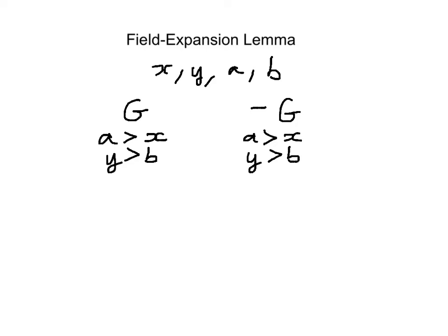However, the members of G are in agreement in terms of how to rank X and Y, and whatever the ranking is, we assume that G will be decisive over X and Y. So the members of G will decide what the social ranking is for the pair X and Y. Let's assume, for example, that all members of G prefer X over Y, and that is reflected by the social ranking — so G is socially decisive over X and Y.